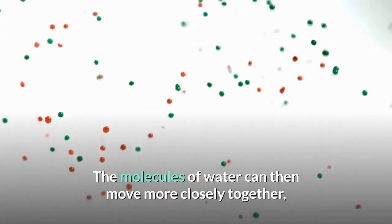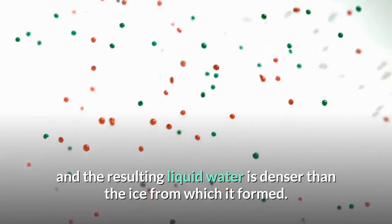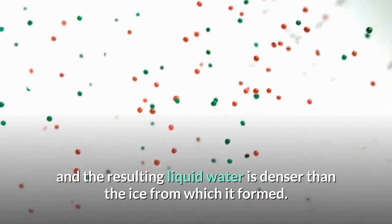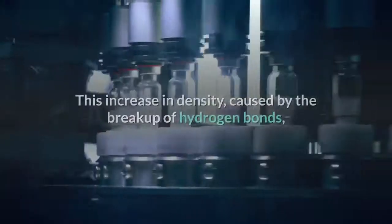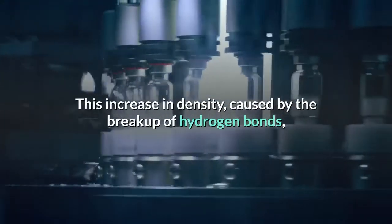The molecules of water can then move more closely together, and the resulting liquid water is denser than the ice from which it formed. This increase in density caused by the breakup of hydrogen bonds continues from the melting point of ice—32 degrees Fahrenheit—to about 39 degrees Fahrenheit.